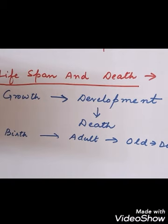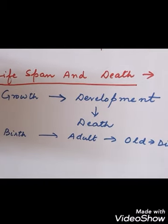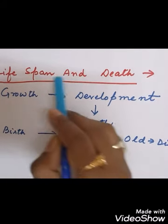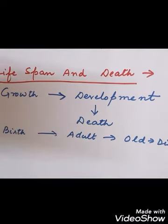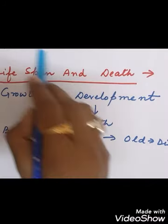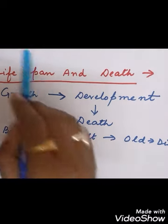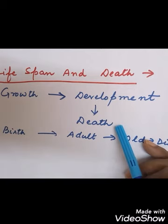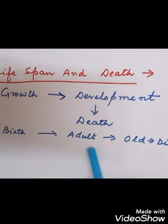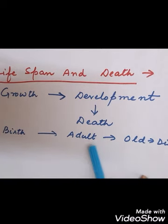The next very important part is lifespan and death. All living things have a fixed lifespan — the time from birth till death. For example, a human being can live for about 80 years, so the lifespan of a human being is about 80 years. All living things follow the cycle of birth, growth, development, becoming adult, becoming old, and then death. This applies not only to humans but to all organisms.